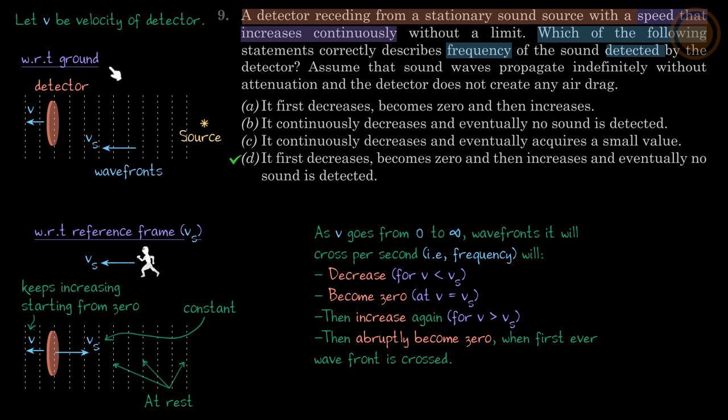So let's make the diagram first. With respect to ground, this source has wavefronts, and this detector is running away with velocity v, which obviously increases. It's not constant. So at any moment it will be v. The wavefronts are moving with the velocity of sound, call it vs. The detector starts from zero and at any point its velocity is v. So this diagram is clear.